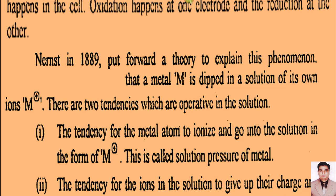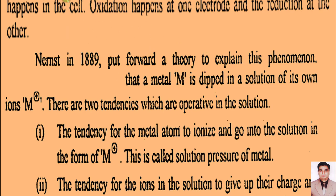The answer is simple: in the galvanic cell, oxidation happens at one electrode and reduction takes place at the other electrode. Where oxidation takes place, electrons are lost; where reduction takes place, electrons are gained. To find out the source of EMF in a galvanic cell, in 1889 a scientist named Nernst developed a theory and derived a mathematical equation which explains what is the source of electromotive force.